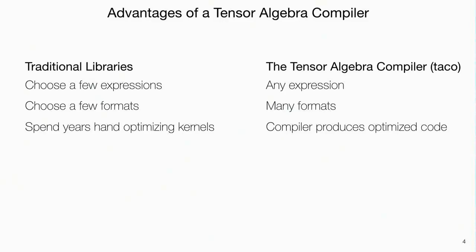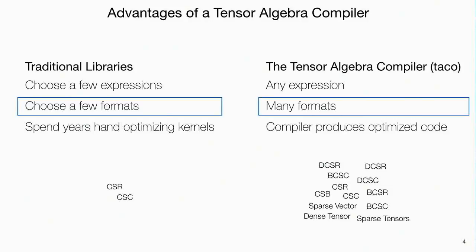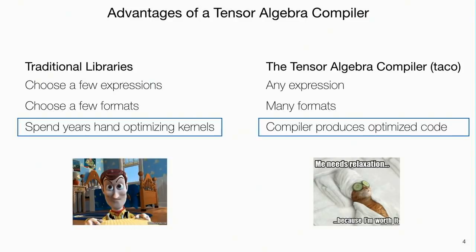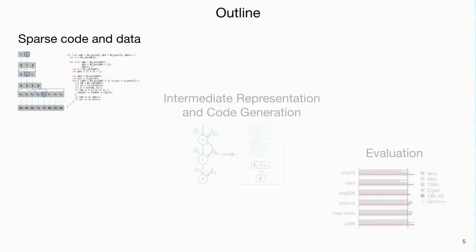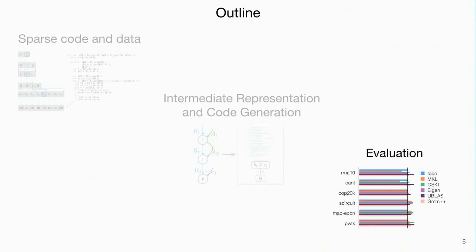We have a tensor algebra compiler called TACO. The alternative is a traditional library where you hand-code kernels — you choose a few important expressions and a few formats like CSR and CSC, and spend years hand-optimizing. With a tensor algebra compiler you get any expression, many formats, and the compiler does the optimization for you. In the rest of this talk I'll cover sparse code and data, then the intermediate representation and code generation, and then evaluation.